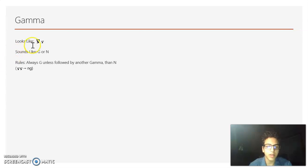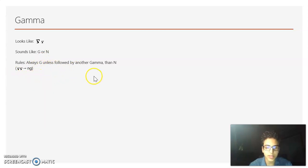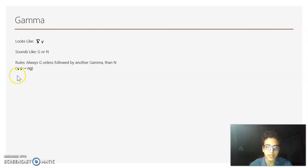Now we have Gamma. It looks like that, and it can sound like a G or an N. Gamma will always sound like a G unless there are two Gammas — then the first one sounds like an N, making an NG sound, like in 'Angelos.' But unless it's followed by another Gamma, it'll sound like a G.